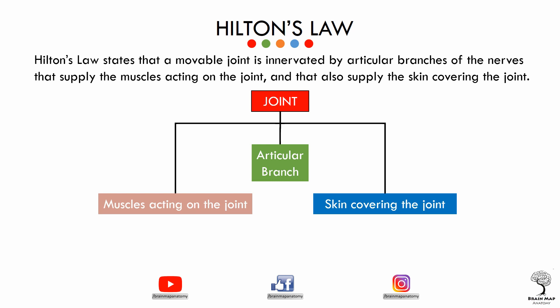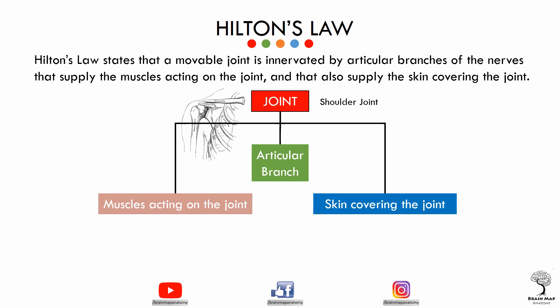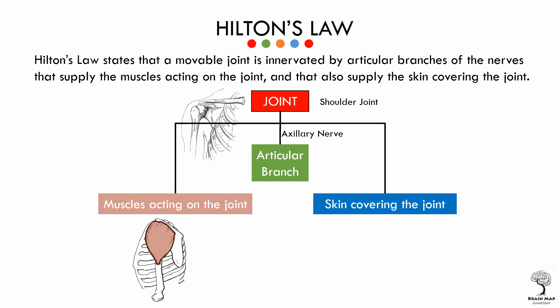Let's consider the shoulder joint. The joint capsule of the shoulder joint is innervated by the articular branch of the axillary nerve. According to the law, the axillary nerve gives a muscular branch to supply the muscle acting on the shoulder joint, which is the deltoid muscle. Also, the axillary nerve gives cutaneous innervation for the skin over the shoulder joint. This cutaneous branch of the axillary nerve is called the upper lateral cutaneous nerve of arm.